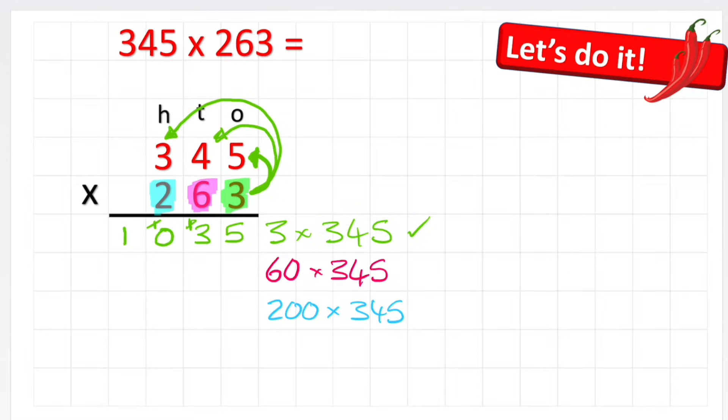Now I can start to look at my second row, my 60 times 345. But I can't just start as I did before by doing 6 times 5, because it's not 6 times 5, it's 60 times 5. So I need to show that 10 times larger by putting in a placeholder here. So now I can look at it as just the 6 and say 6 times 5 is 30, and again, small 3, large 0.